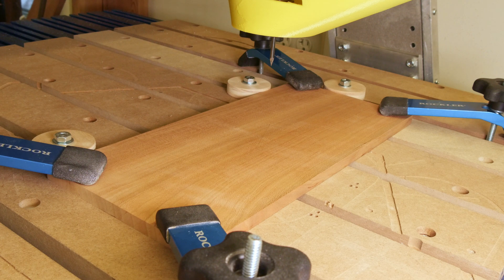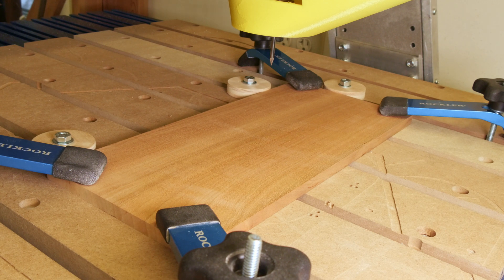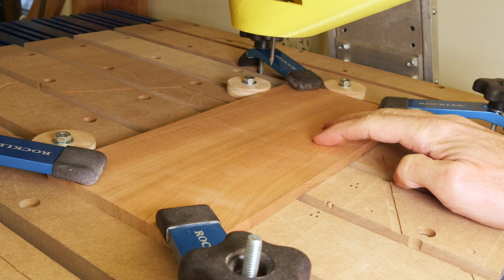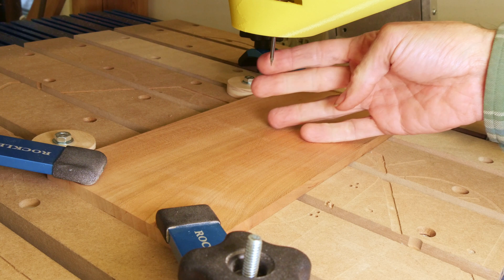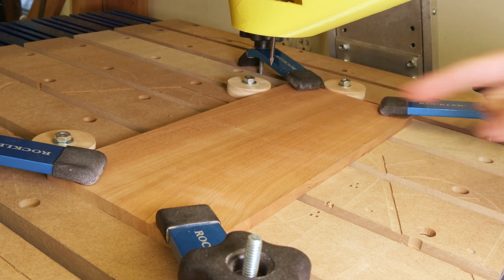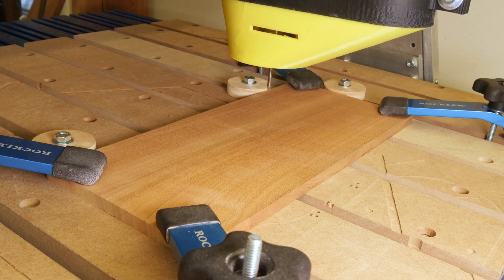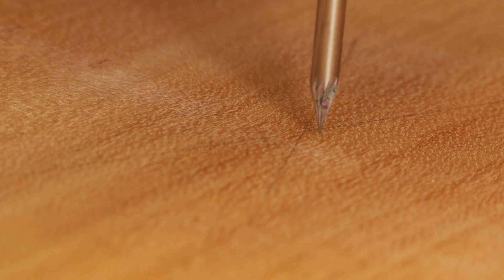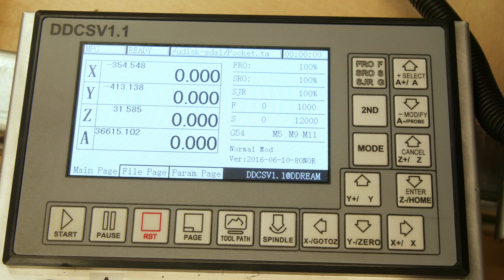Now I need to zero out the axes of the CNC router and in my toolpath I've set it up so that X and Y zero is at the very center of the game board. So I drew a cross on the center of this board just by connecting the corners and I've got in the router bit a very fine point bit and I'm just going to align that point with the center point of the board by jogging it with the CNC controller. So now I've got all axes set at zero at this point.